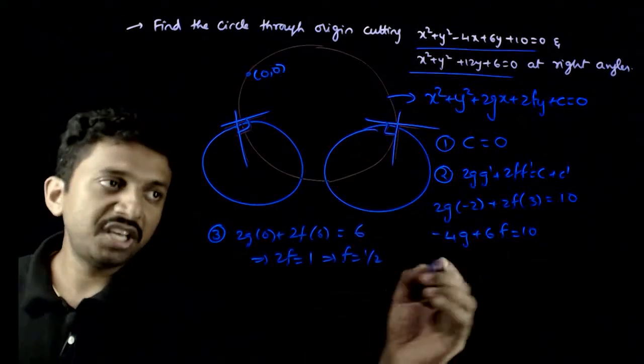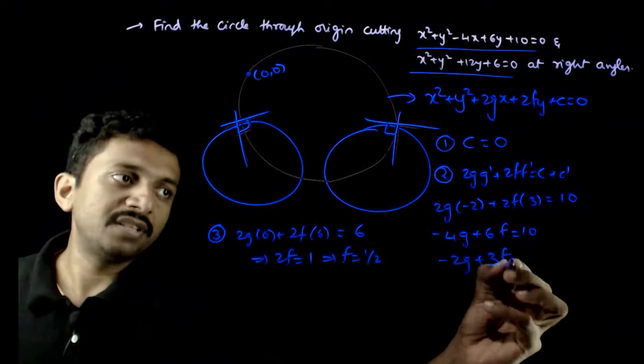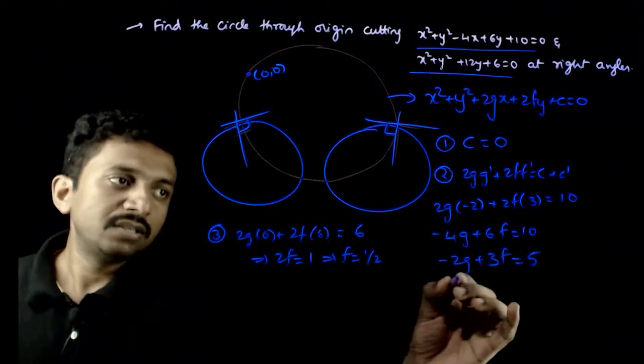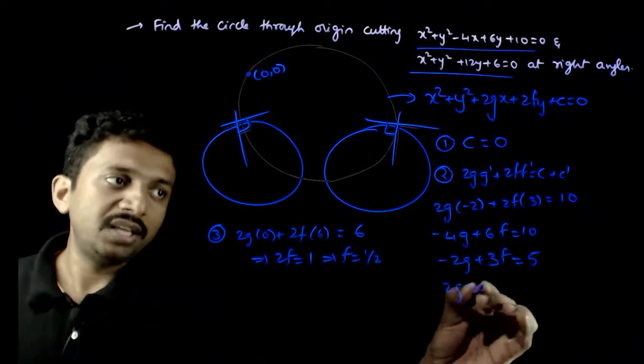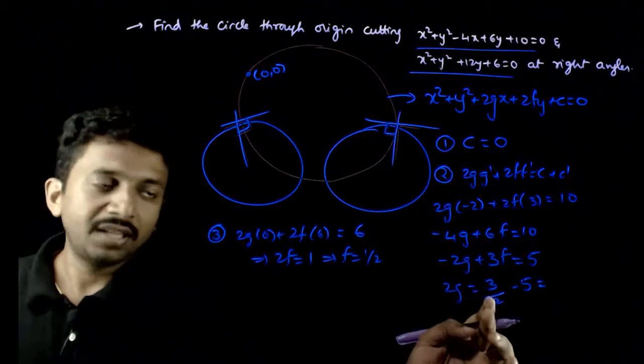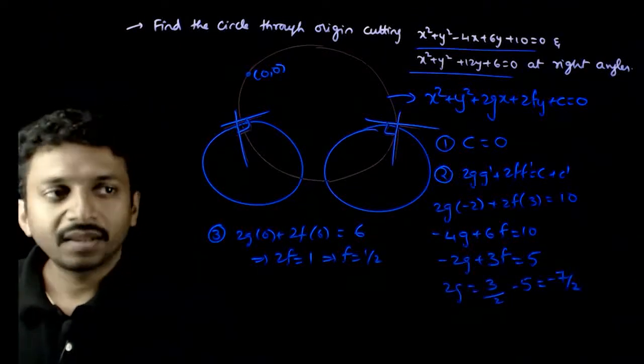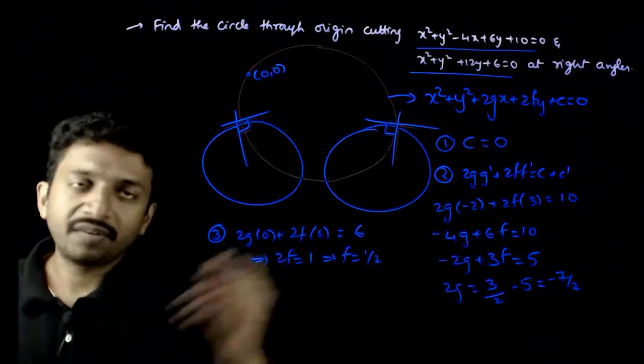So, if f is 1 by 2, from there we get g. So, you have minus 2g plus 3f is equal to 5. So, 2g is equal to 3f, that is 3 by 2 minus 5. That is equal to 3 minus 10, minus 7 by 2. So, you got the value of g and the value of f.